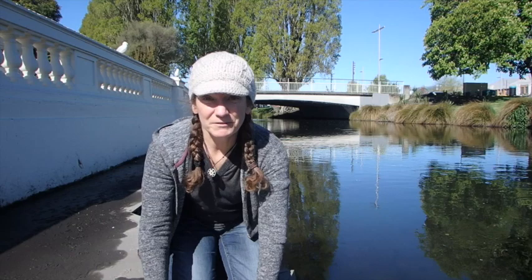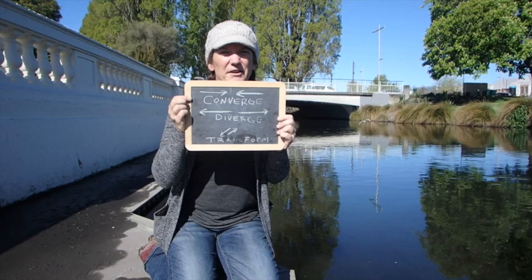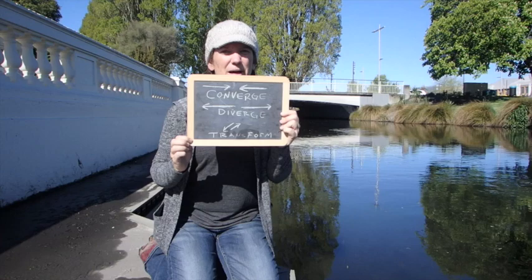So how do these plates move? There are a few different ways. They can converge, which means the plates come together. They can diverge, which means they come apart. And they can transform, which means they rub up against each other.